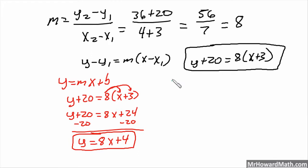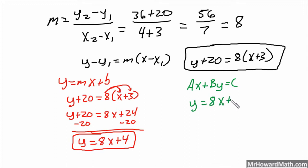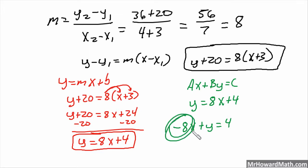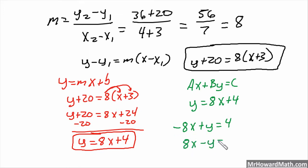Next and last, we'll do standard form. Standard form is ax plus by equals c, so that means x and y on the same side. Starting with slope-intercept: y equals 8x plus 4. Get x and y on the same side — take the 8x over to that side by subtracting it. So it would be negative 8x plus y equals 4. Proper standard form says the x term must be positive, so flip all of the signs. Final answer would be positive 8x minus y equals negative 4. That would be the final answer in standard form.